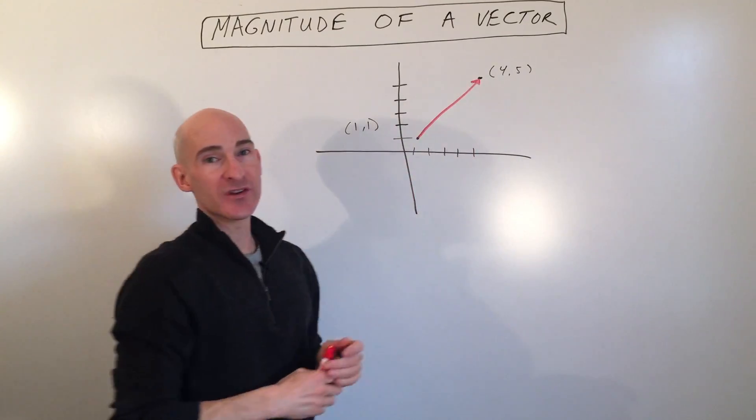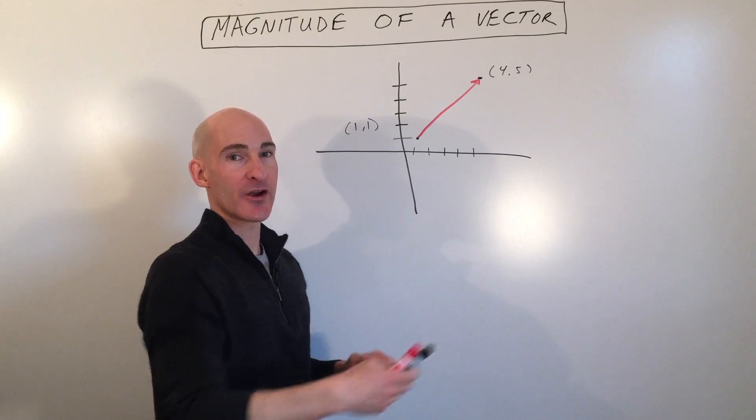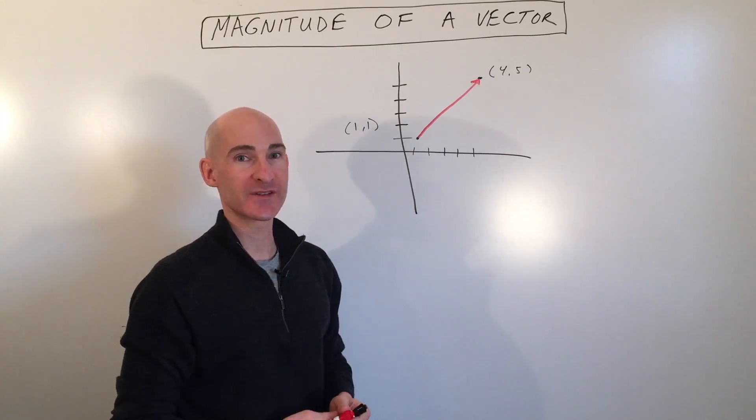How long the vector is. It represents how much force is being exerted. The larger the magnitude, the larger the force, for example.